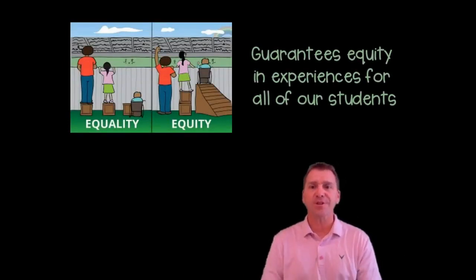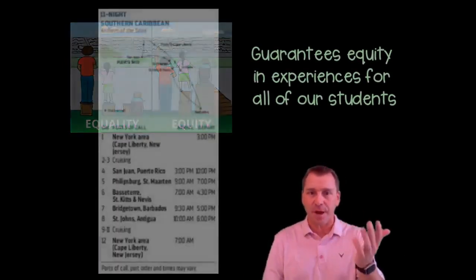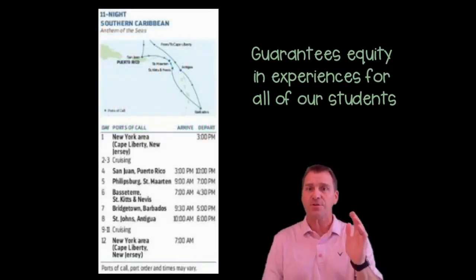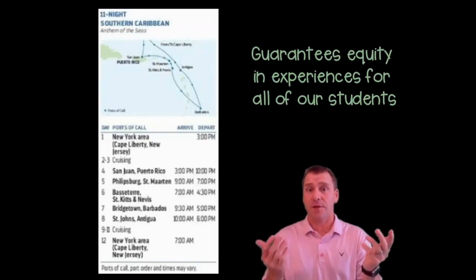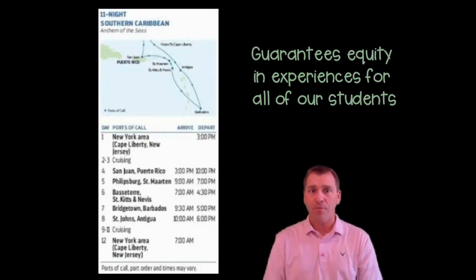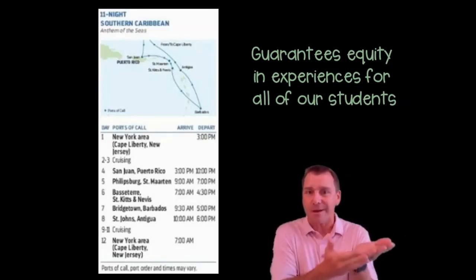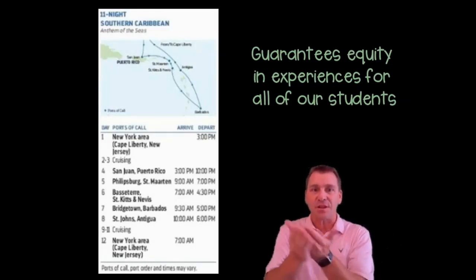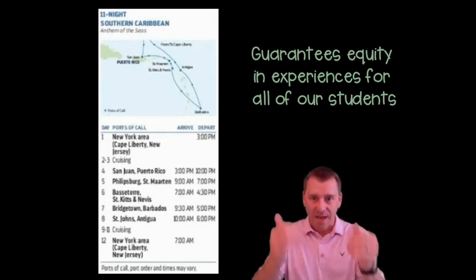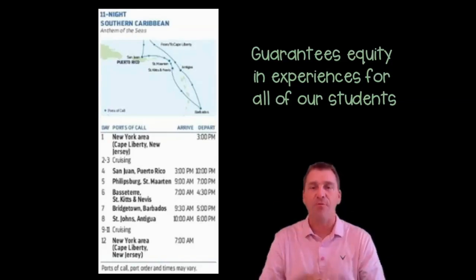So, if the learning plan shows we are heading to the Southern Caribbean islands, then all of our students across all buildings are going to be stopping at the same islands, as you see in the itinerary. It's not equitable for one class of students to go to Jamaica and another class of students to go to St. Lucia. We want the same rich experiences for all of our students.